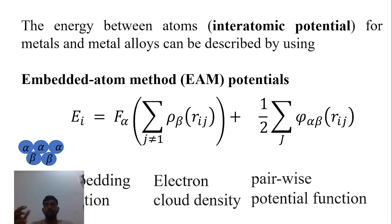This is the equation for the Embedded-Atom Method potential. Again, it has three components: embedding function, electron cloud density, and pairwise potential function. This video is not very technical, but I will try to describe how experimental research in metals and metal alloys is based on EAM potentials.